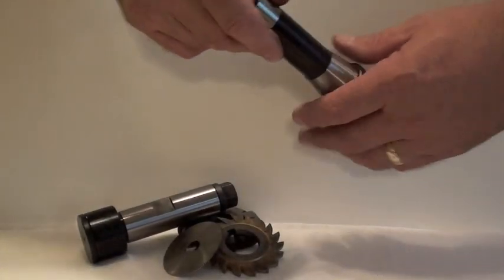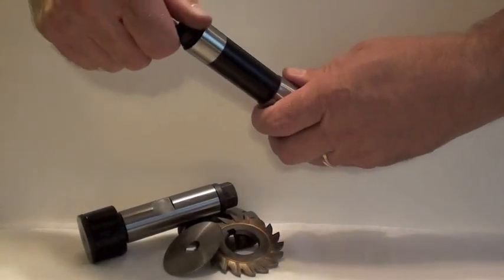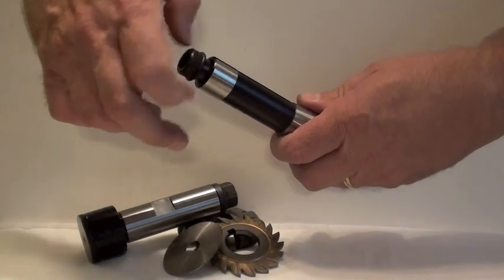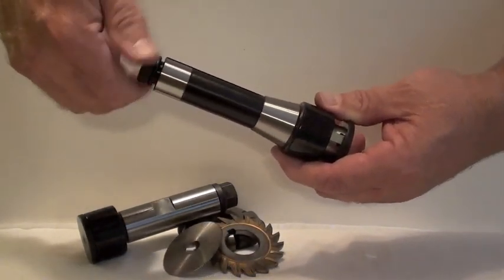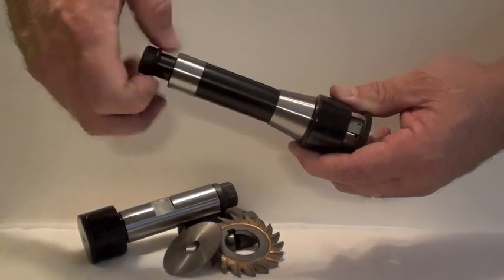This is the Toolmark Arbor System, manufactured by Spirit Tool in Auburn, Maine, USA. It's the best way to hold a side milling cutter or slitter saw.